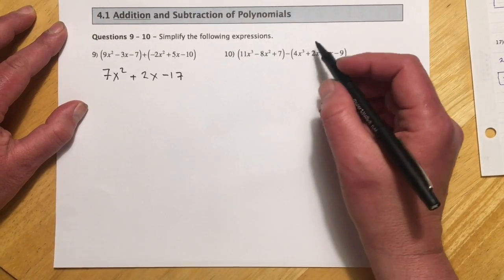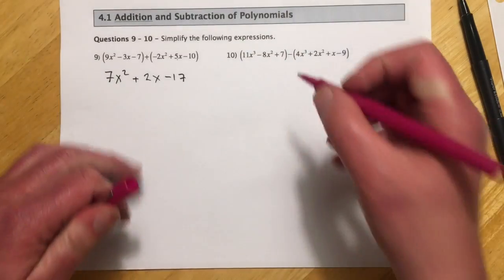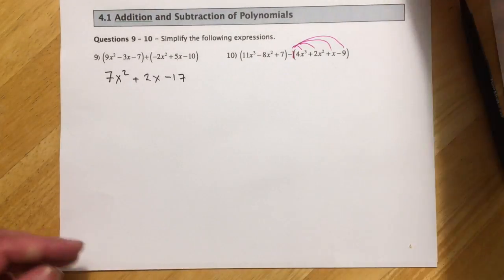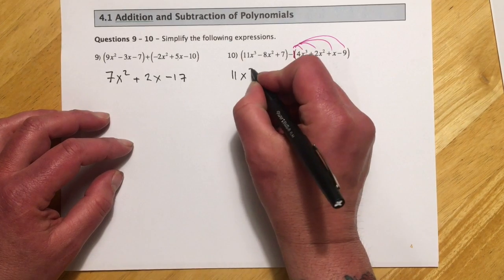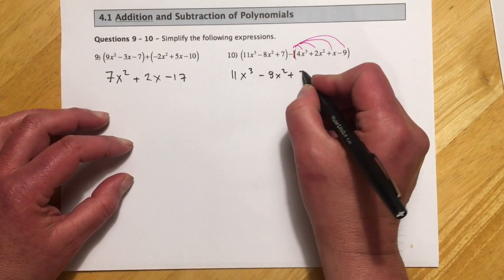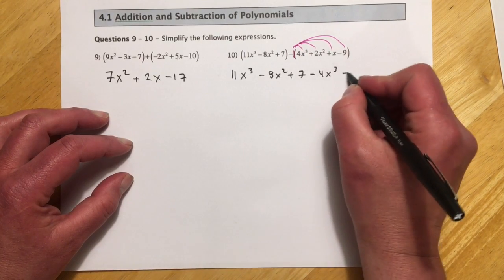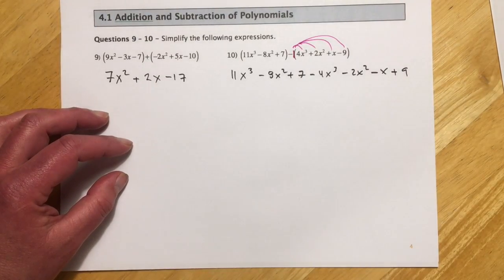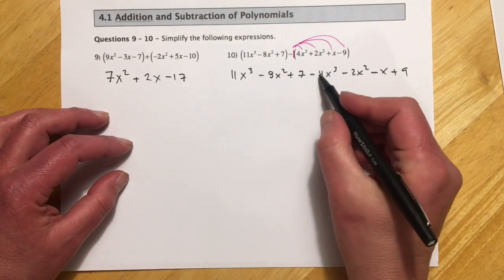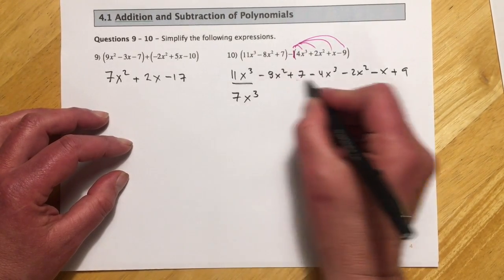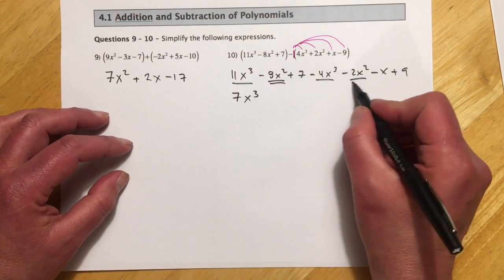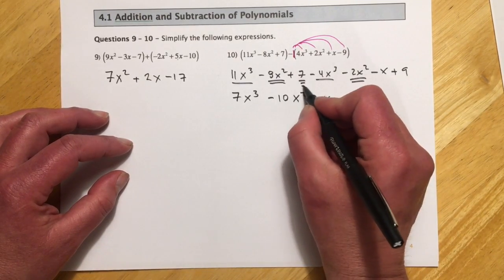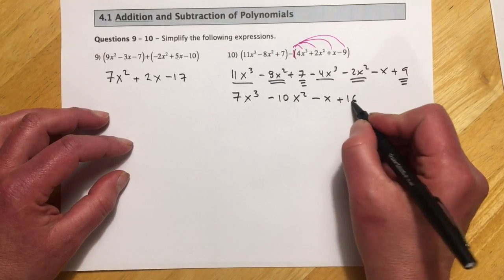For the subtraction problem, your choice whether or not to rewrite it, but that minus sign has to get distributed — think of it as a little negative 1 that goes to every term. I'll show it rewritten: negative 4x cubed minus 2x squared minus x plus 9. Combining like terms: 11 minus 4 leaves 7x cubed, then for squared terms that's minus 10x squared, and then we have the lone x, and 7 plus 9 gives us 16.